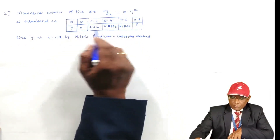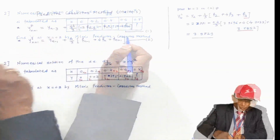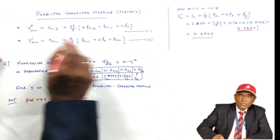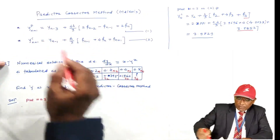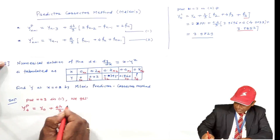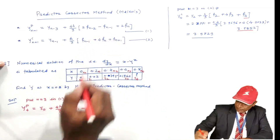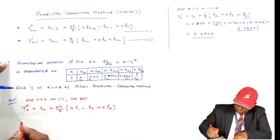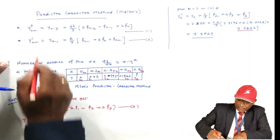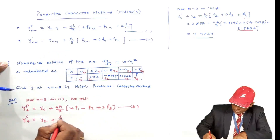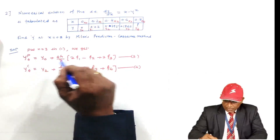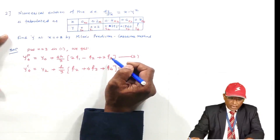The function has changed, but the approach is the same. We want Y4, so put N = 3 in equation 1 to get the predicted value YP4, and in equation 2 to get YC4. F1, F2, F3 are computed separately. The function here is f(x, y) = x − y².